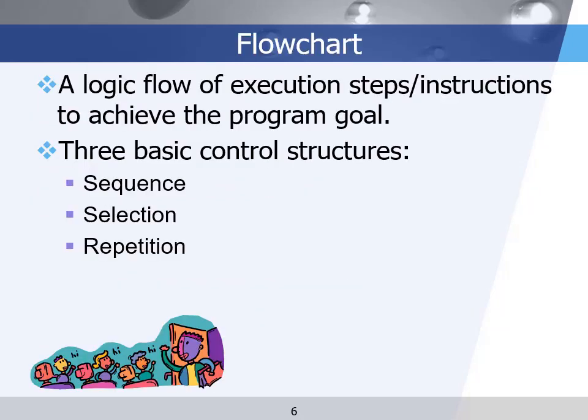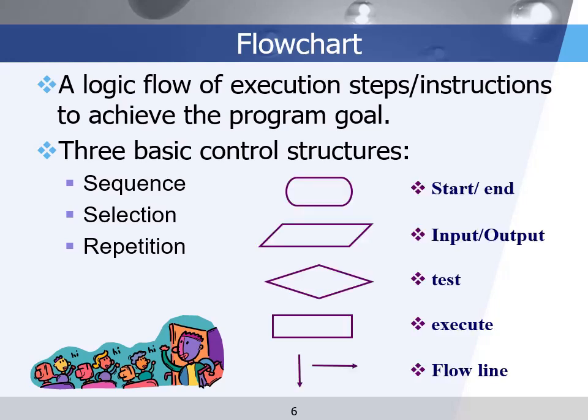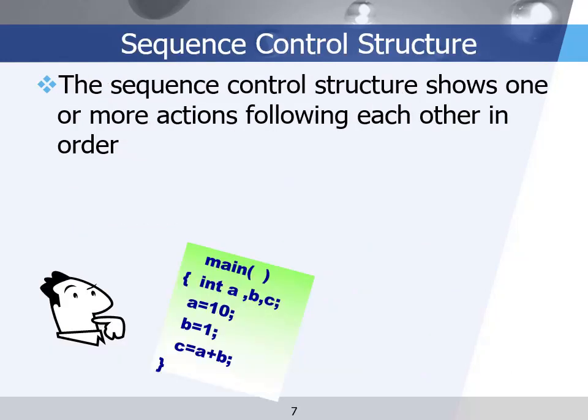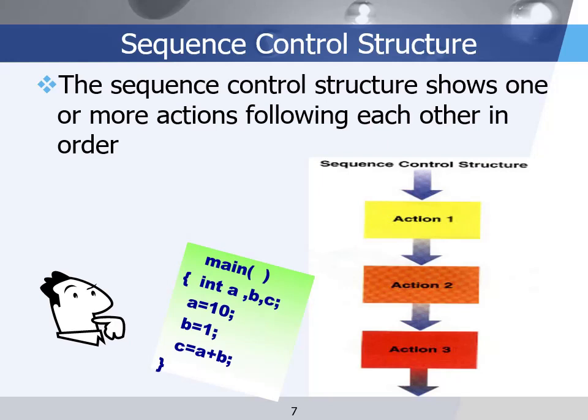There are only three basic control structures: Sequence, Selection, and Repetition. We can use these symbols to represent all three. The sequence control structure shows one or more actions following each other in order — it's the simplest structure. We just put one action after another, and they will be executed sequentially. As shown in this figure, it has three actions executed in order.